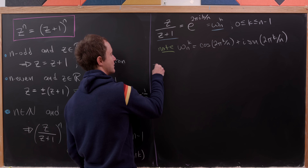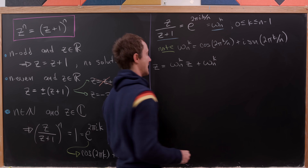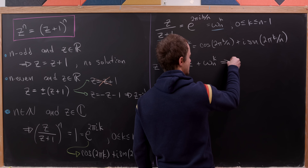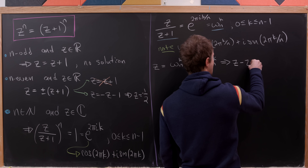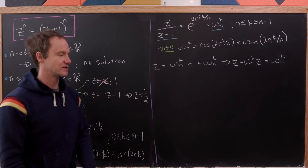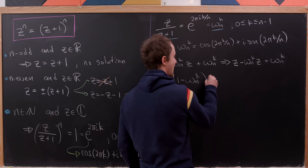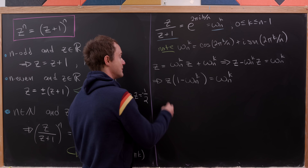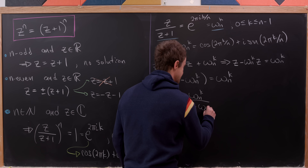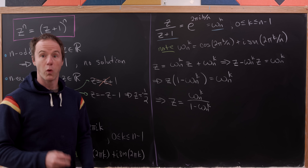Cross-multiplying leaves z equals omega sub n to the k times z plus omega sub n to the k. Moving everything with a z to one side gives z minus omega sub n to the k times z equals omega sub n to the k. Factoring out z: z times the quantity one minus omega sub n to the k equals omega sub n to the k. Dividing both sides gives z equals omega sub n to the k over one minus omega sub n to the k. We can simplify this quite a bit to make it look nicer.